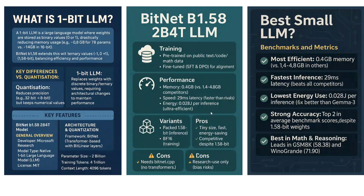Before we jump into BitNet b1.58 2B4T details, we first need to understand what a 1-bit LLM is. By the name, 1-bit LLMs are LLMs where weights are stored in binary values — zero or one — that's it. So you save a lot on weight size. Usually, weight values are stored in float 16 or float 32 precision, leading to heavy memory usage, but in a 1-bit LLM it is just one bit per weight.